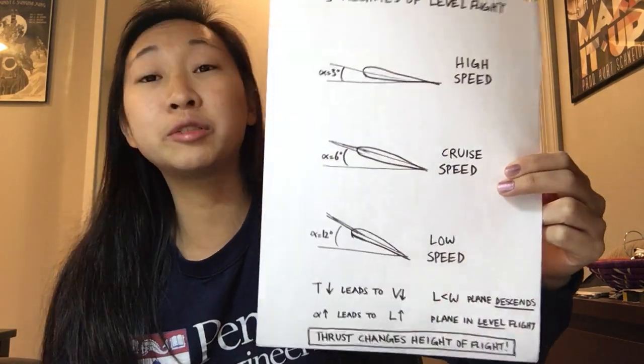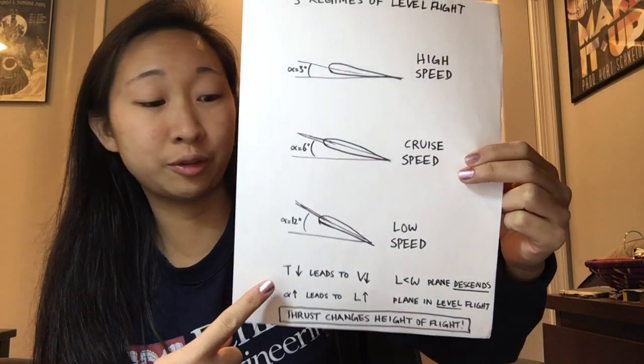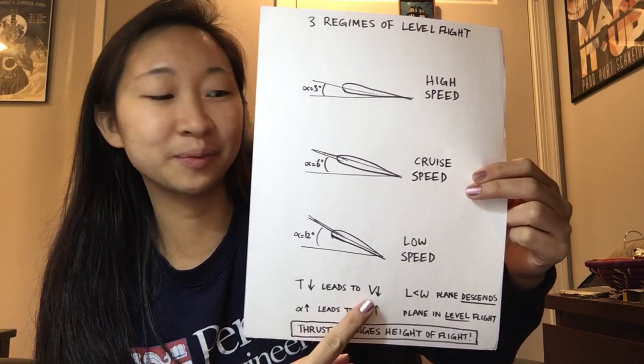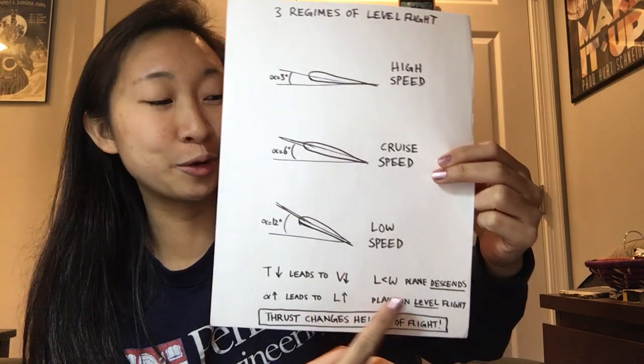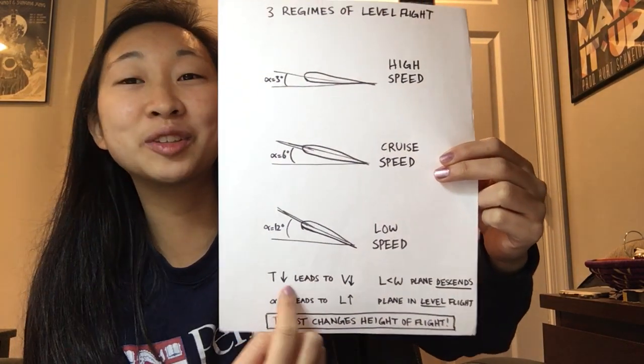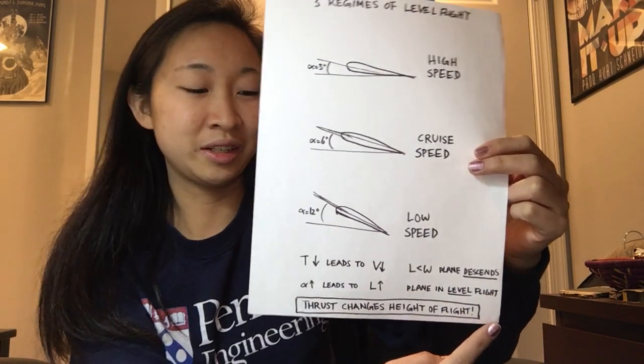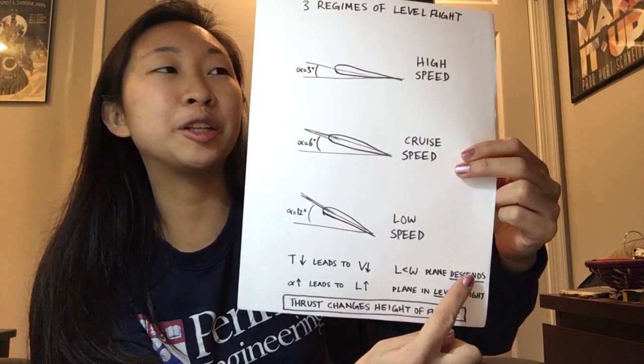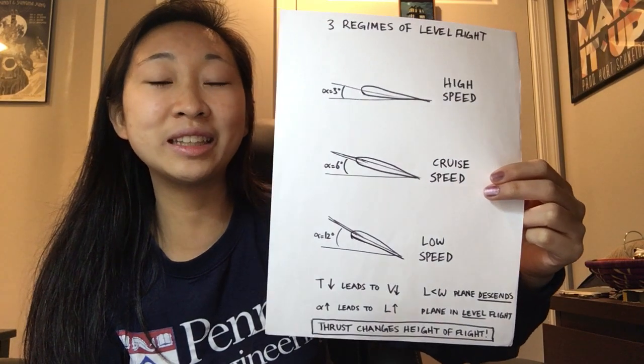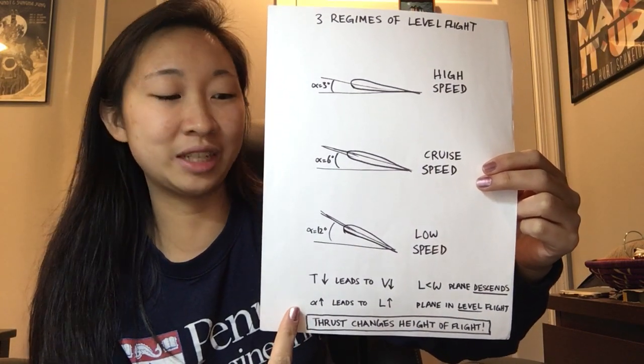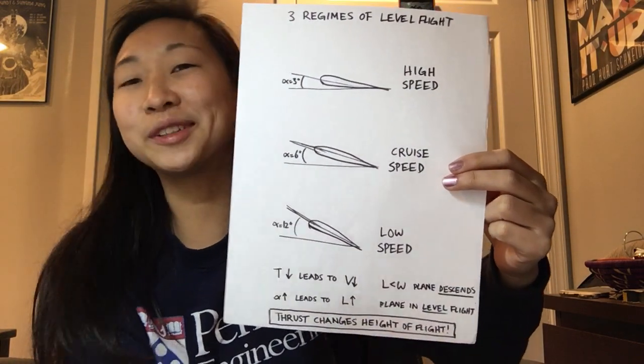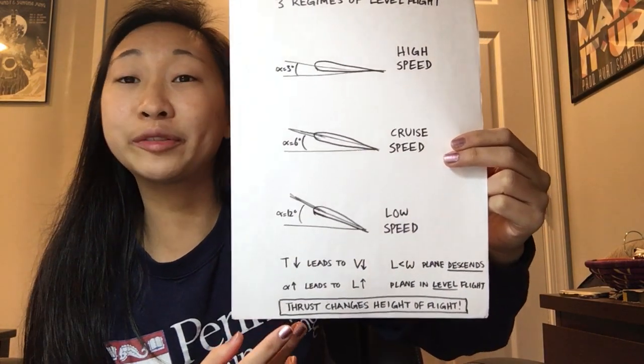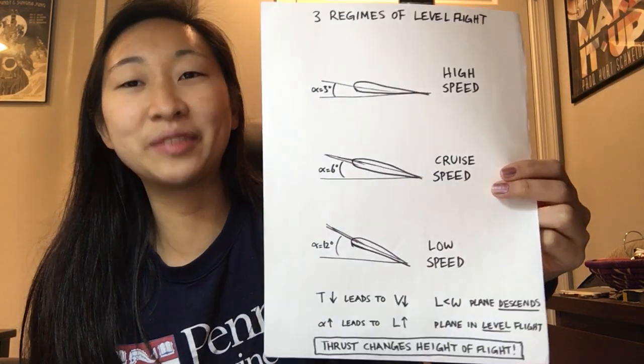You think, okay, to slow down, I'll decrease my thrust. What happens when you decrease your thrust? This actually leads to a lower speed, which as you remember earlier, very much lowers your lift. Your lift goes below your weight. Your plane descends. So you tried to slow down your plane. Instead, you started going down. To compensate there, you actually can increase your angle of attack because you're descending and you're not in level flight anymore. So if you want to maintain that level flight, you can increase your angle of attack, which leads to increased lift, and your plane returns to level flight and it's back in equilibrium. So the main takeaway for this is that thrust actually changes the height of your level flight.